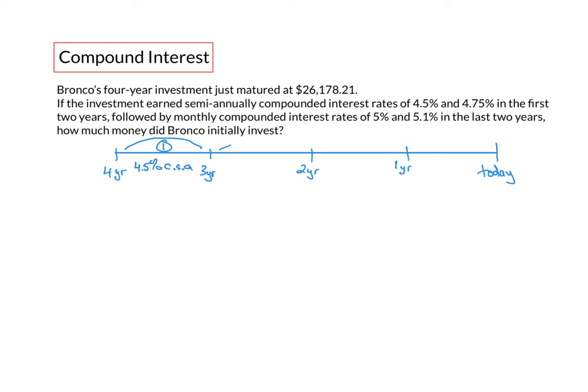In year two, the investment was earning 4.75% compounded semiannually. In year three, the investment was earning 5%, this time compounded monthly.